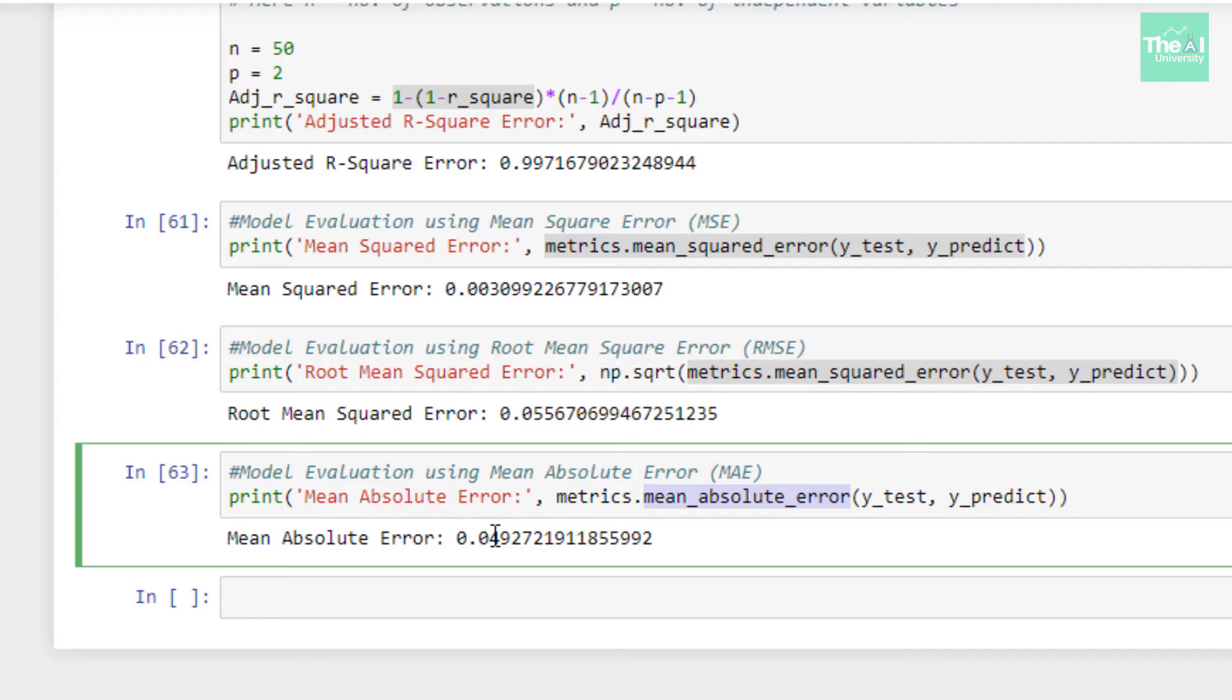So folks, this is it for this video. To conclude, I explained the remaining techniques of model evaluation of regression family of algorithms like mean absolute error, mean square error, and root mean square error. So let me ask you a question from today's video: if we have outliers in the data, then which evaluation technique should we use, MAE or MSE?